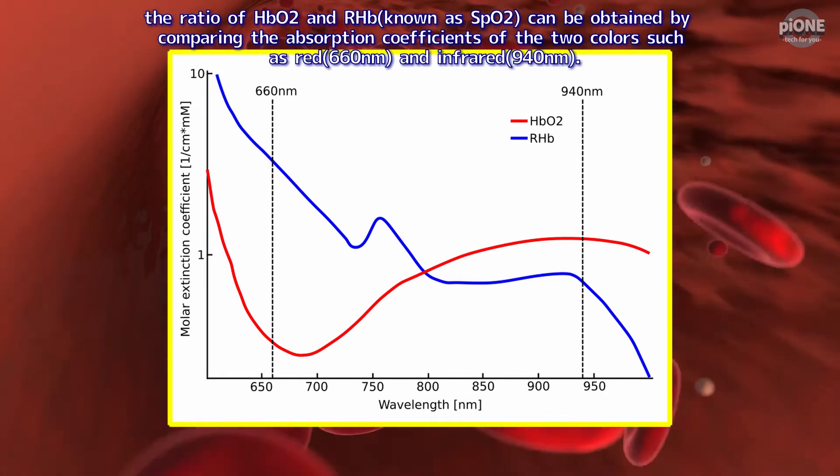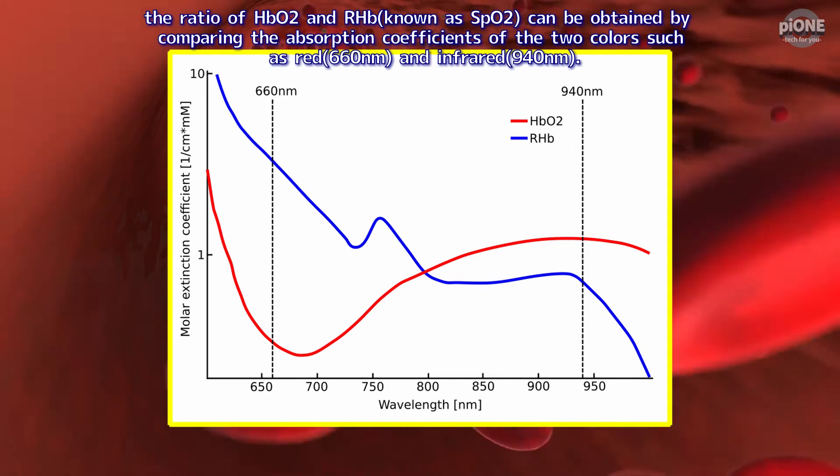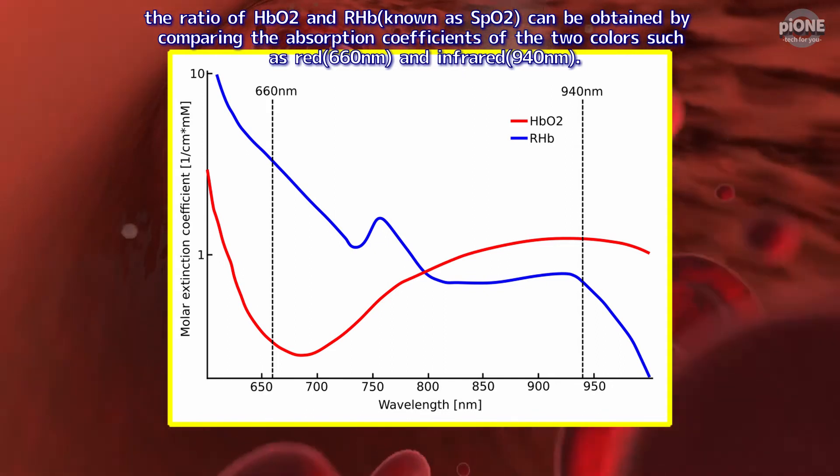The ratio of HbO2 and Rhb, known as SPO2, can be obtained by comparing the absorption coefficients of the two colors such as red 660 nanometers, and infrared 940 nanometers.